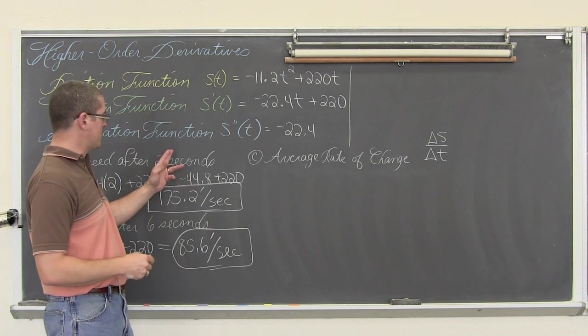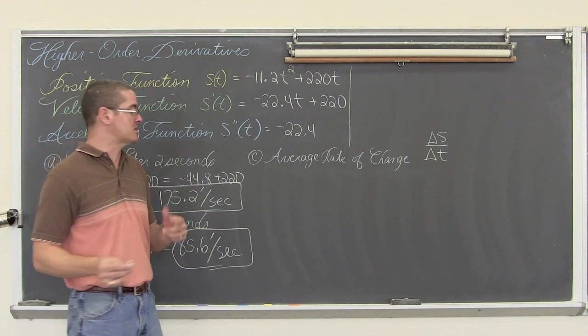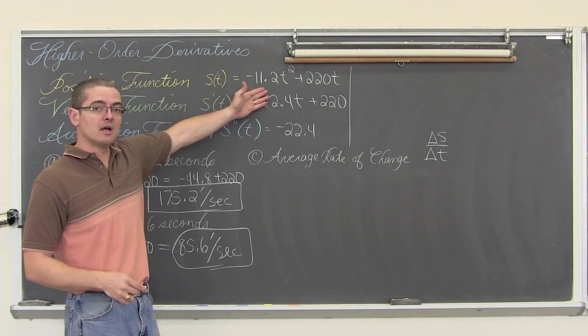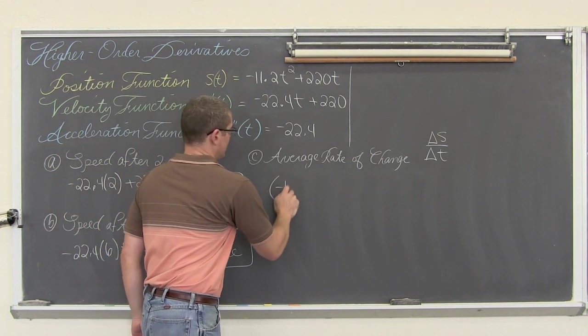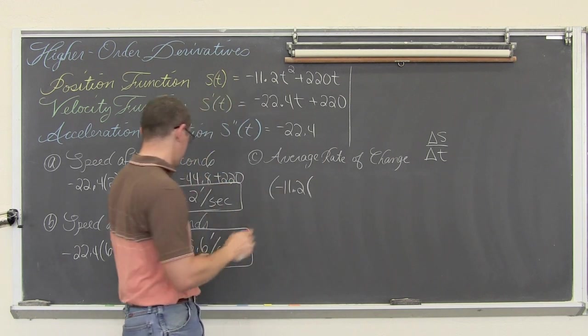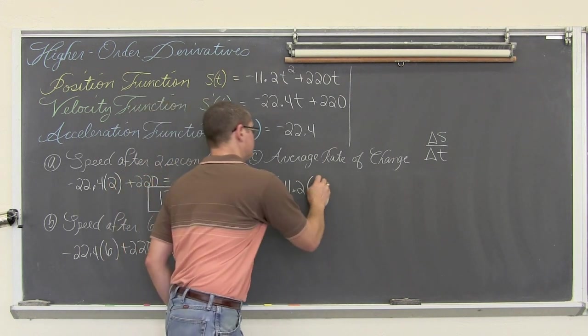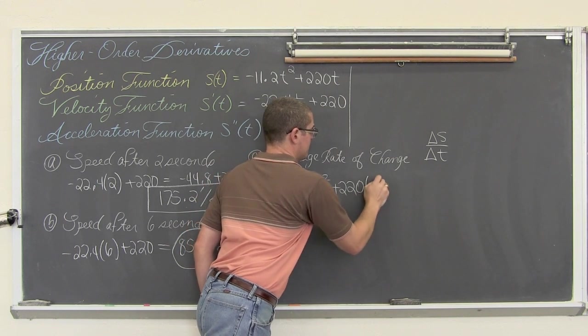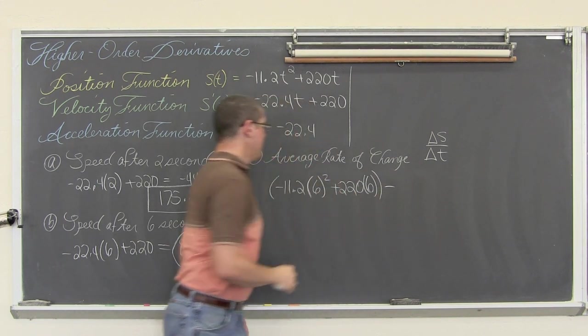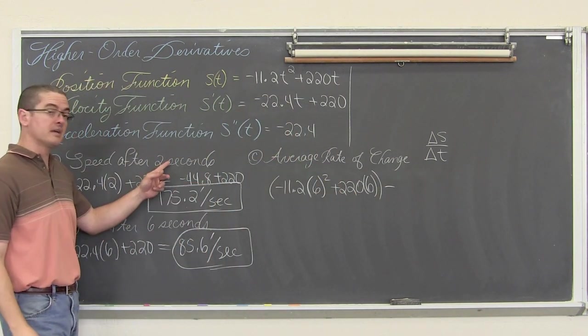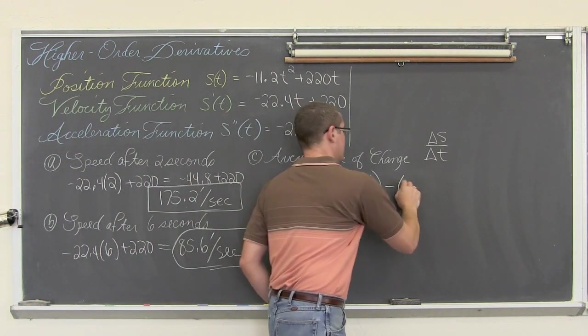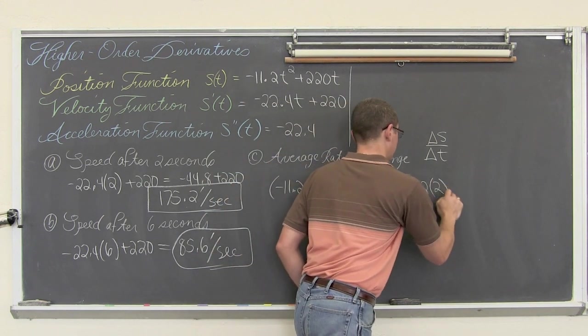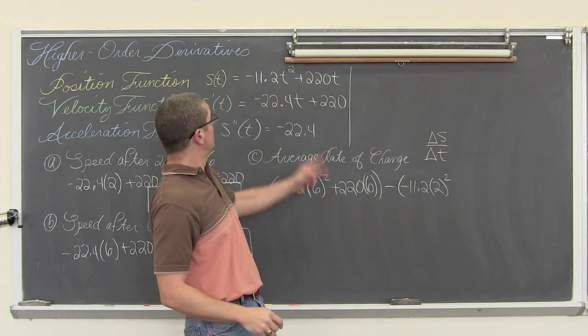So the average rate of change between seconds 2 and 6 is going to be found by taking...we are going to take 6 seconds plugging in the original position function. So we have negative 11.2 times 6 squared plus 220 times 6 minus...now we are going to take the 2 seconds and plug it in. So we have negative 11.2 times 2 squared here.